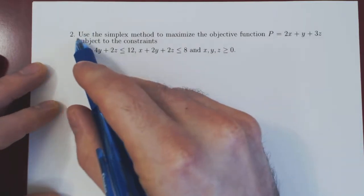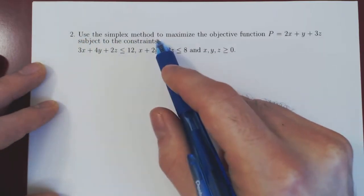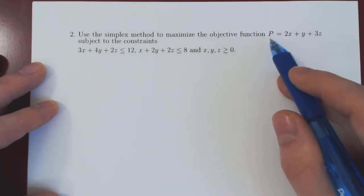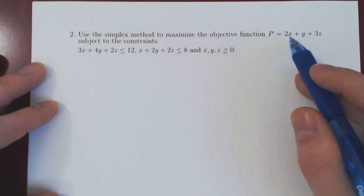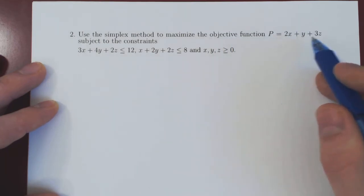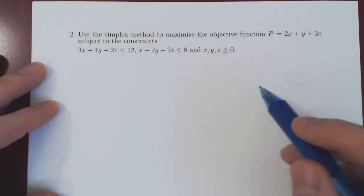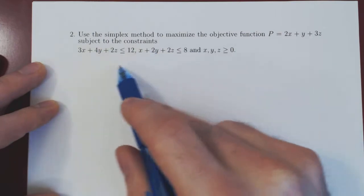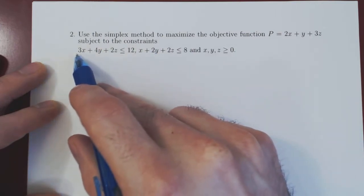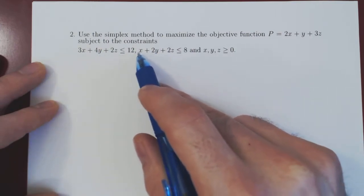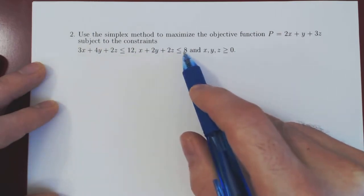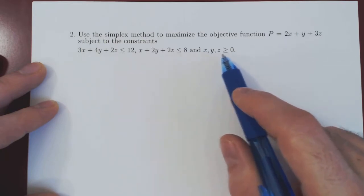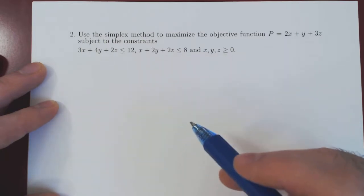In this video we will use the simplex method to maximize the objective function p equals 2x plus y plus 3z, subject to the following constraints. Here's the first constraint, second constraint, and as always, all the variables must be non-negative.